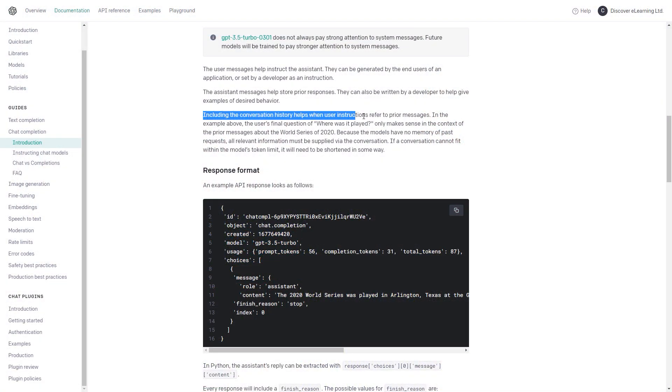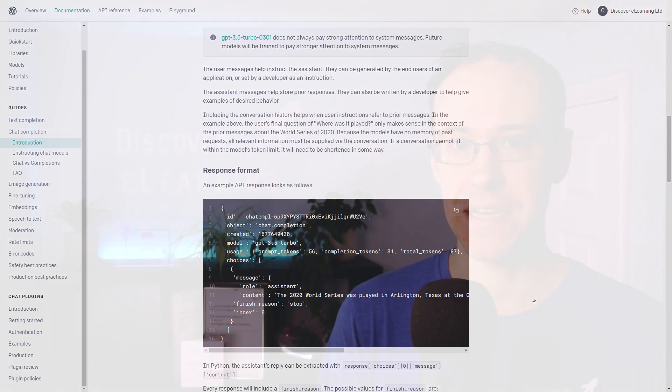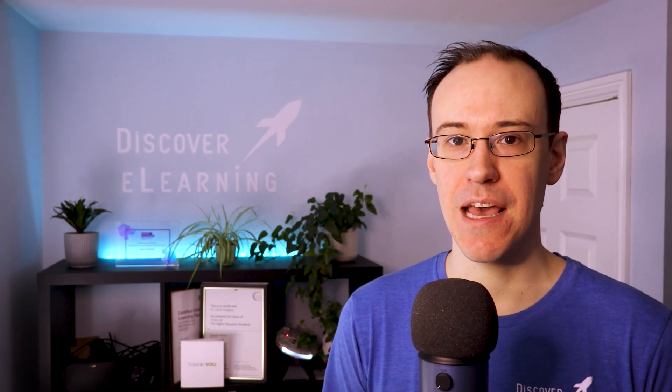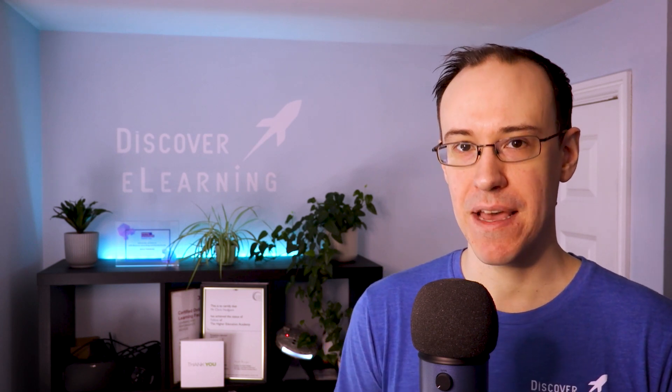This means that with every request made to the OpenAI server through our API application, we are the ones responsible for passing in the records of every previous user or GPT assistant message to the API if we wish for the next response to follow on from a conversation thread.